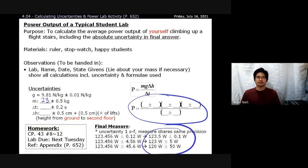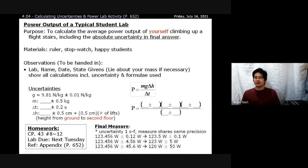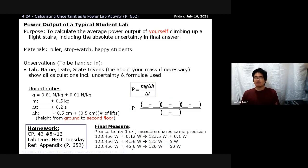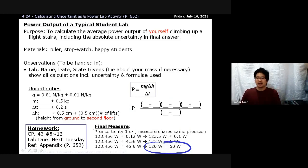Make sure your final answer is rounded to one sig fig on the uncertainty. If your uncertainty is something like 45.6 watts, that's too precise — how would you know you're off by exactly that much? It's an approximation. For example, your power output is roughly 120 watts and you could be as far off as 50 watts because your collected data was imprecise — that's totally acceptable.